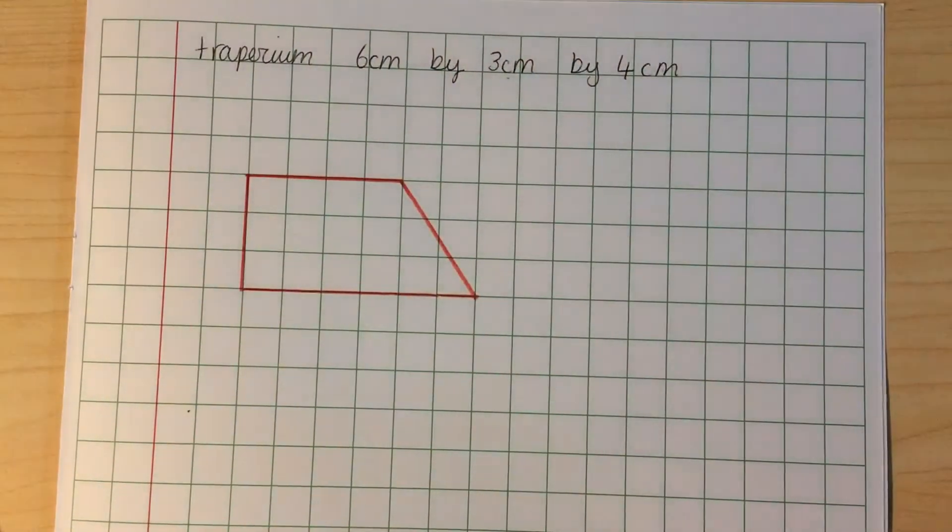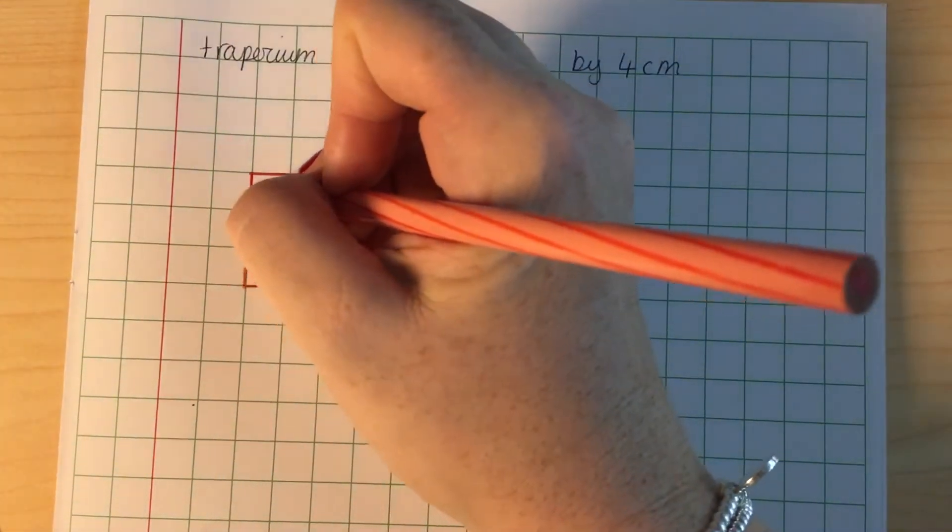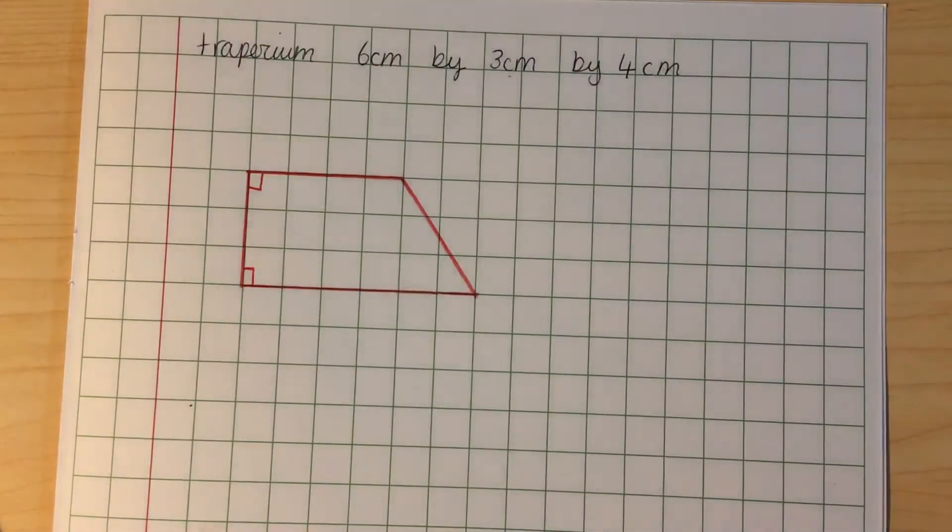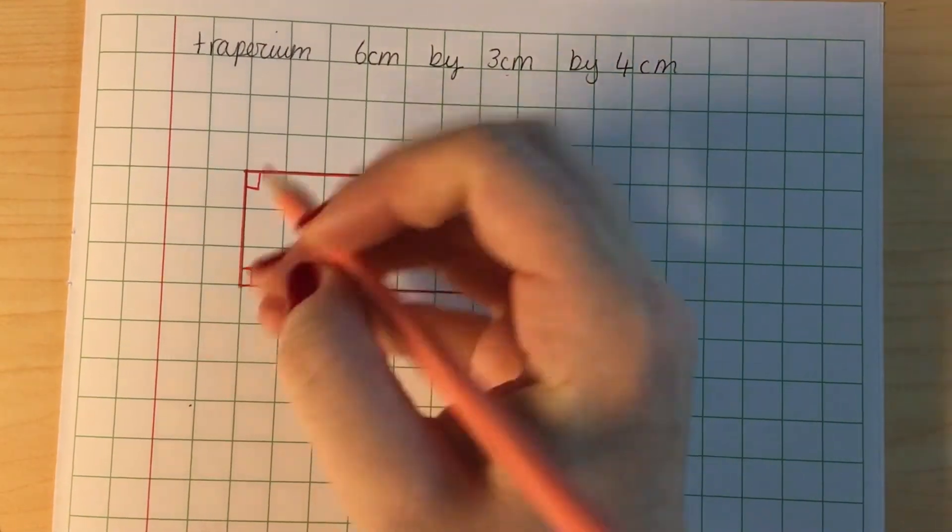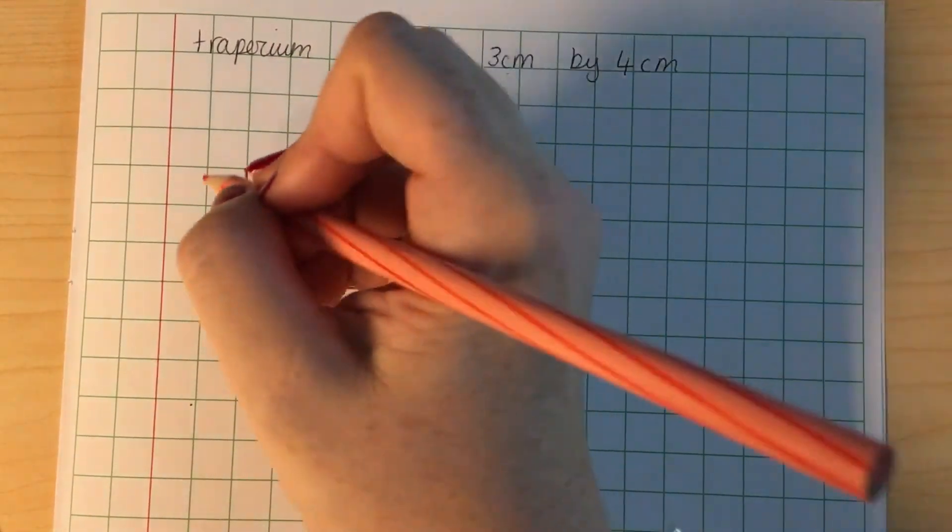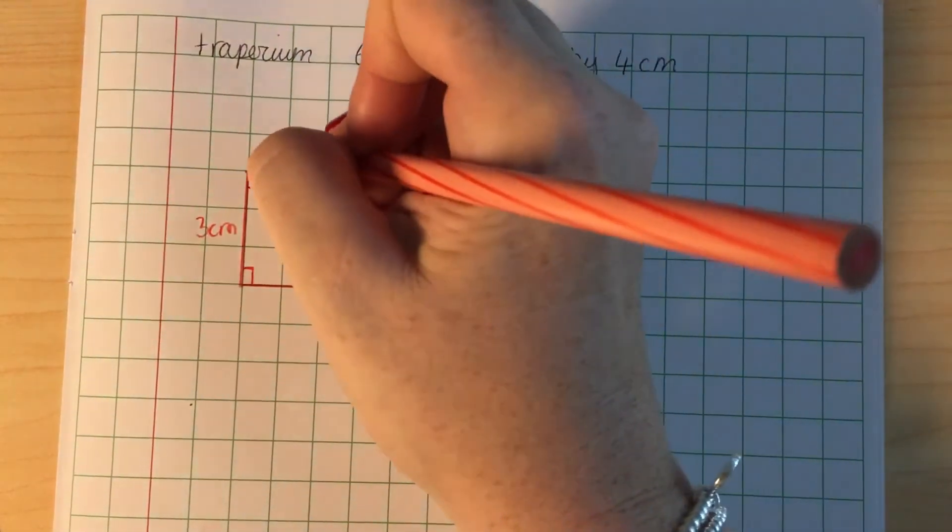Alright, so then we can label this angle as 90 degrees, and this angle as 90 degrees. We can label this base as 6 cm. We can label this side as 3 cm. And we can label the top as 4 cm.